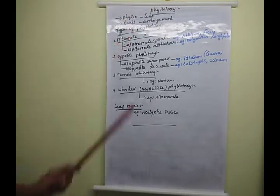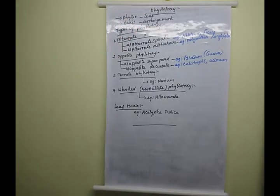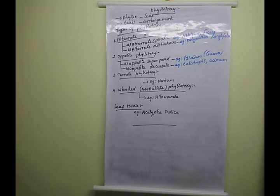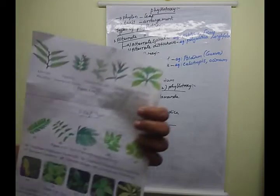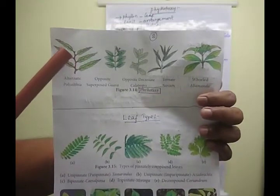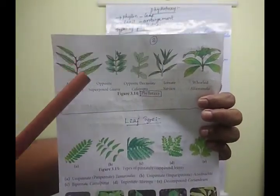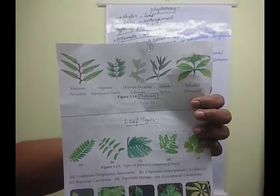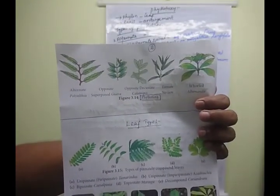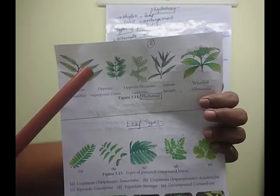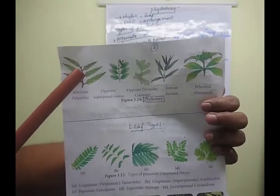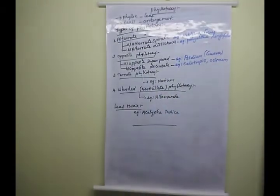The next important topic — also a five-mark question — is phyllotaxy. What is phyllotaxy? The mode of arrangement of leaves on the stem is known as phyllotaxy. 'Phyllon' means leaf, and 'taxis' means arrangement.